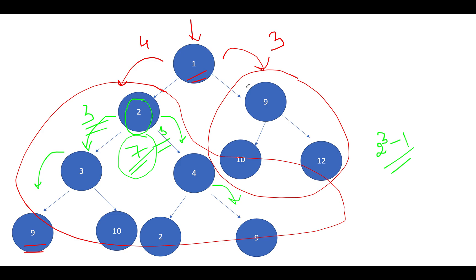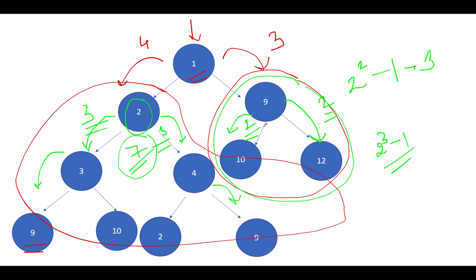Now for the right child (node 9), the depth of its rightmost leaf is 2 and the depth of its leftmost leaf is also 2, so we use the formula: 2^2 − 1 = 3. The total nodes at this root = 7 + 3 + 1 = 11. Counting manually: one, two, three, four, five, six, seven, eight, nine, ten, eleven — confirmed.